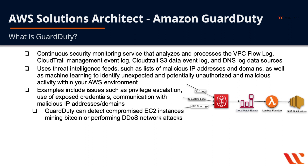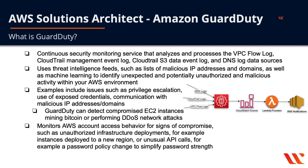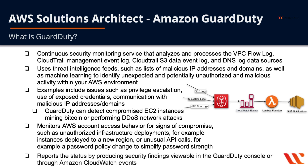GuardDuty can also detect compromised EC2 instances for things such as mining Bitcoin or performing DDoS network attacks. It monitors AWS account access behavior for signs of compromise, such as unauthorized infrastructure deployments — for example, instances deployed to a new region you've never used before, or unusual API calls like a password policy change to simplify password strength. GuardDuty reports findings viewable in the GuardDuty console or through Amazon CloudWatch events.